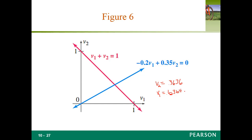The equilibrium vector V is V1 equals 4/11 (approximately 0.6364) and V2 equals 7/11 (approximately 0.3636).